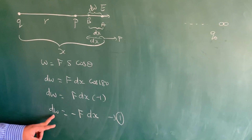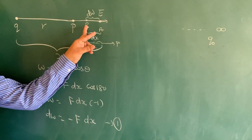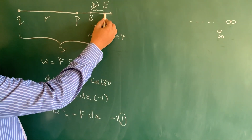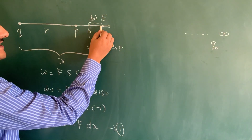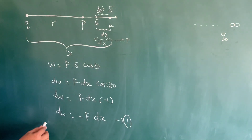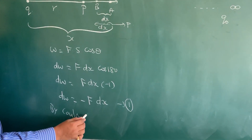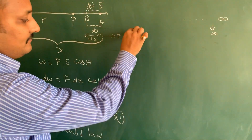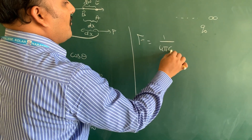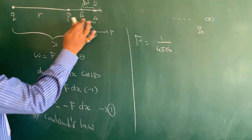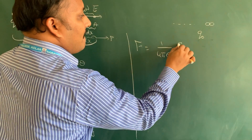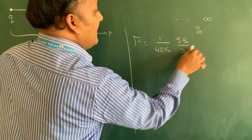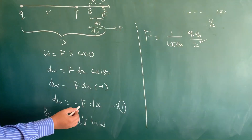So dw is the small amount of work done to move charge q naught from a to b through distance dx. Now, the force when q naught is at point a — the distance between a and charge q is x. By Coulomb's law, the force between two charges is f equal to 1 by 4 pi epsilon naught times q1 q2 by r square. Here q1 is q and q2 is q naught, and the distance is x. Substitute this f in equation number 1.